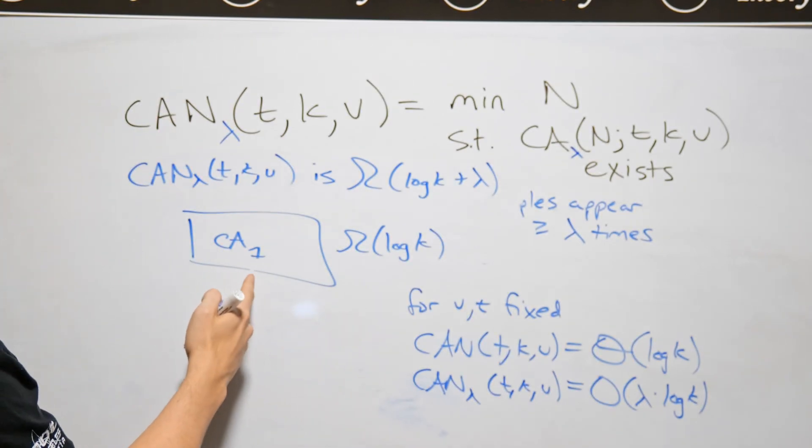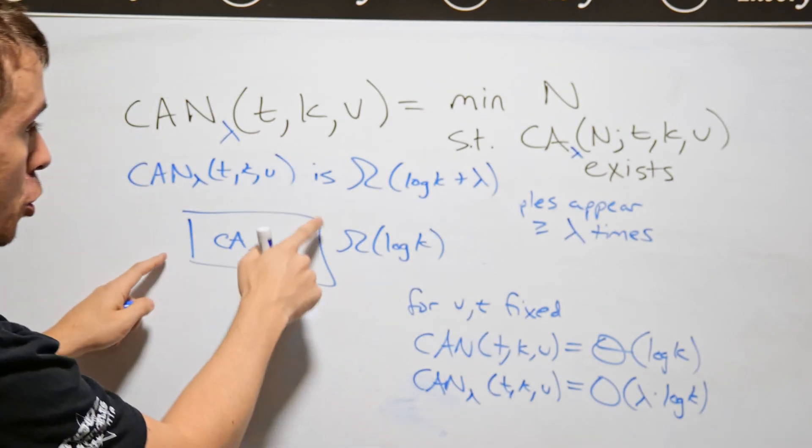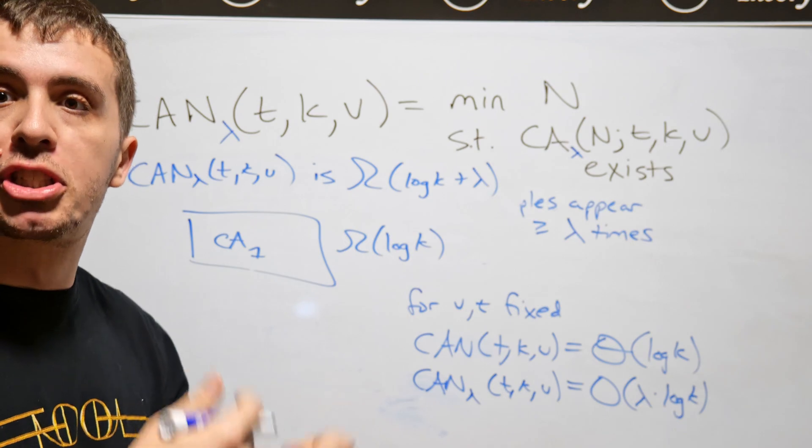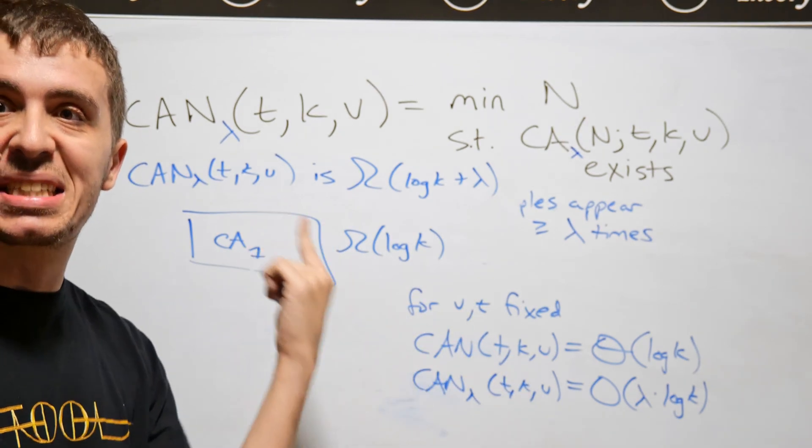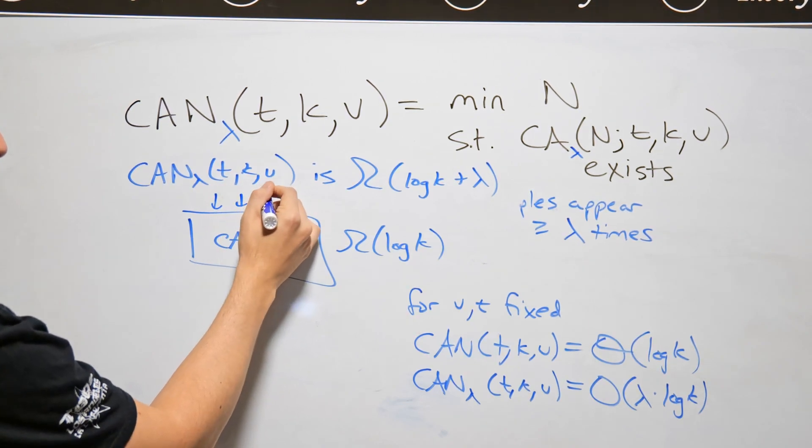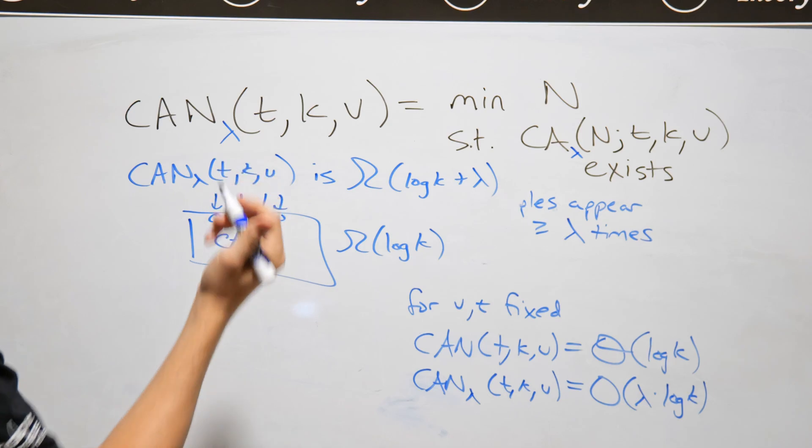But in order to complete this to a covering array with index lambda, each thing in here must be covered at least once. And so therefore, something in here must be covered exactly once. And so there's some interaction, let's say it's this one right here, with some values, maybe zeros in all of them, but it doesn't matter.